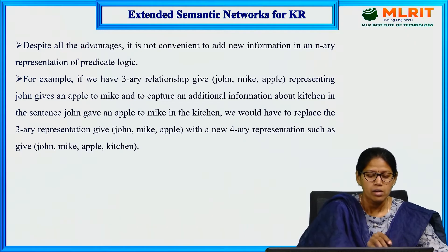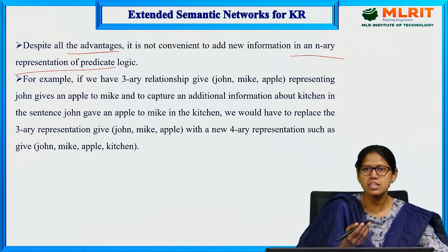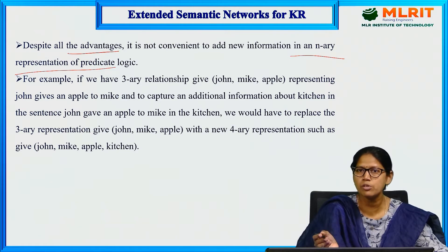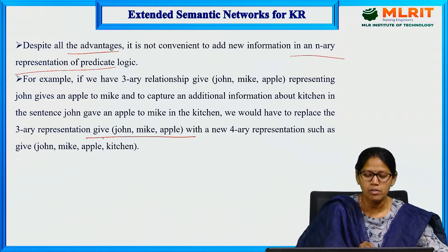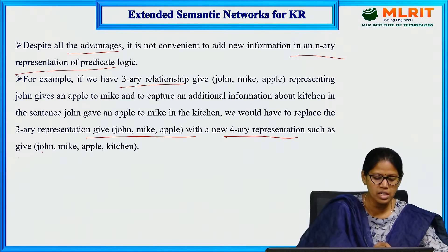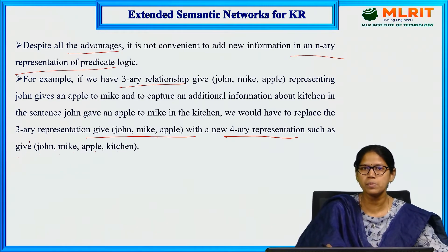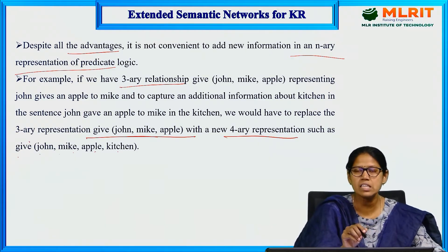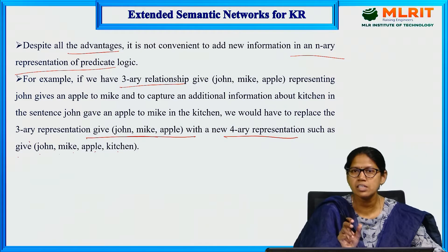Other than this advantage, we have an N-array representation of predicate logic. We can represent the same sentence using three-array representation: when John gives apple to Mike, we write Give(John, Mike, apple). But when kitchen is added to that sentence, the three-array representation is changed to four-array representation: Give(John, Mike, Apple, kitchen). Whereas in binary classification, it is easy to add information without changing anything — without modifying the predicate logic, we can directly add the sentence at the end of the knowledge.